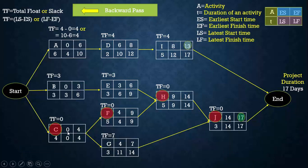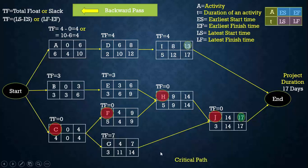For example, if activity C is delayed by one day, the total project duration increases by one day to 18 days. On the other hand, activity B is non-critical with a total float of 3, so it can be delayed up to 3 days — it can be started anywhere between day 0 and day 3 and finished anytime between day 3 and day 6. The critical path is C → F → H → J. Thank you for watching the lecture.